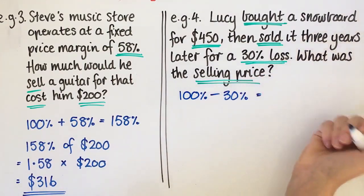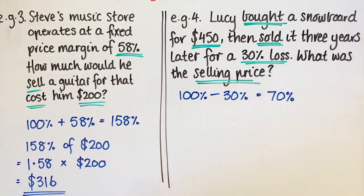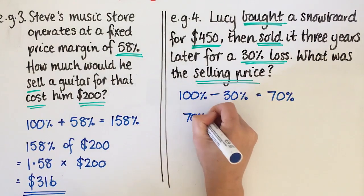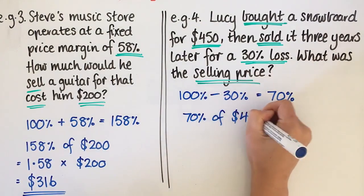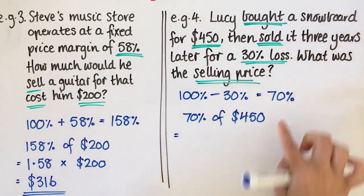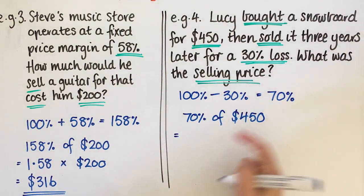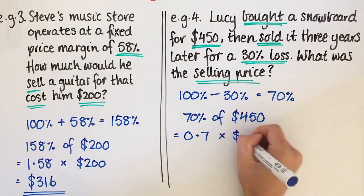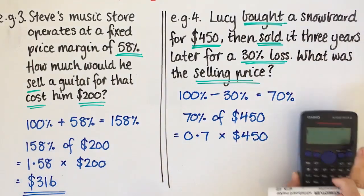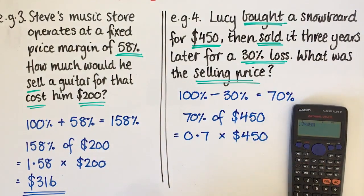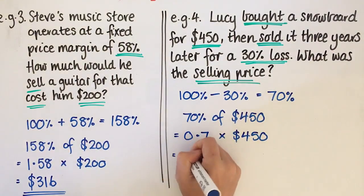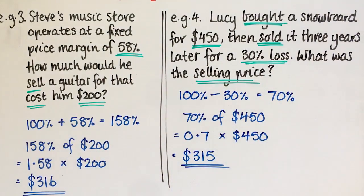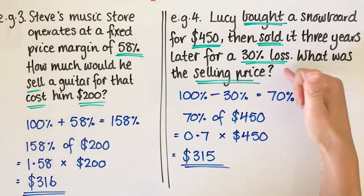So 100% take away 30% is 70%. So we need to find out what 70% of $450 is, because that's how much she sold it for, 70% of the original price. So 70% changes to 0.7. And then we times those together. I'm going to do that on my calculator, 0.7 times 450, $315.